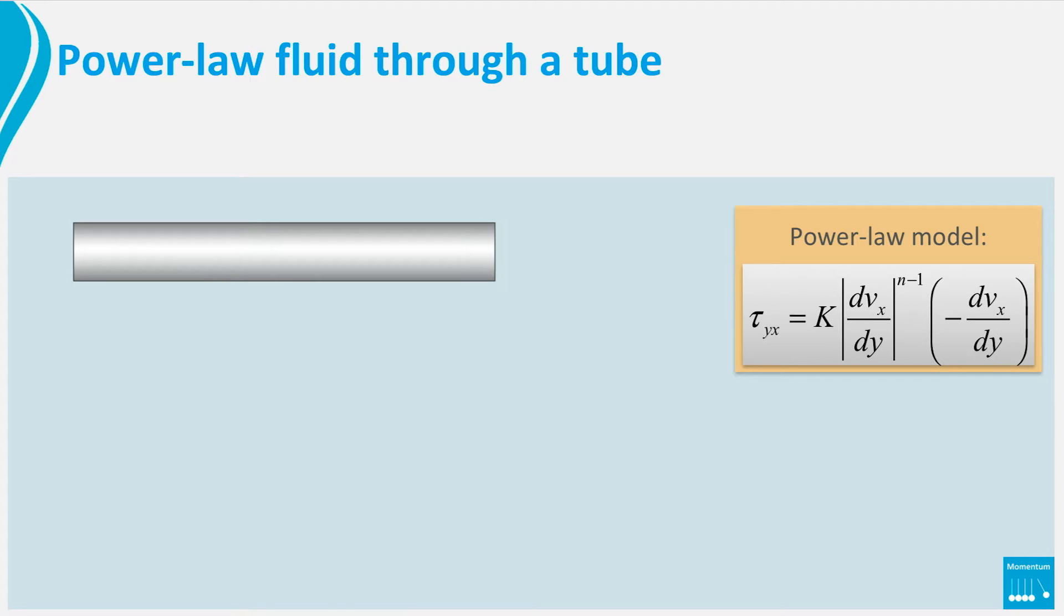We have seen in the previous video how we can derive the velocity distribution in the cross-section of a tube for a Newtonian fluid. Let's now look how we can derive the velocity of a laminar flowing power-law fluid through a tube. Think about the polymer solution or emulsion which is pumped through a horizontal pipe with a radius R and a length L.